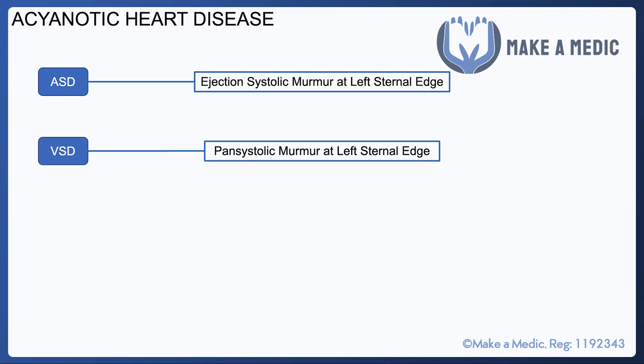There are a few different acyanotic heart diseases that are worth knowing about. This is sort of rote learning, but it's worth just having a summary on one slide. An atrial septal defect usually causes an ejection systolic murmur heard loudest at the left sternal edge.